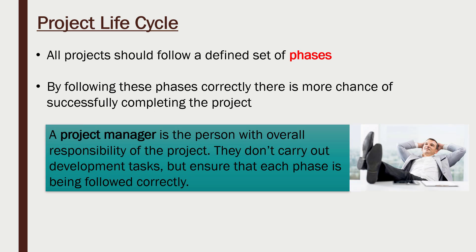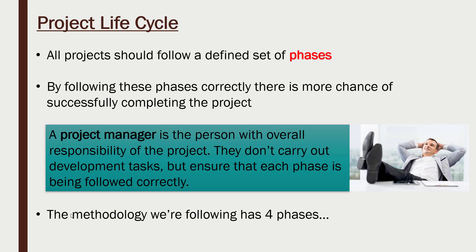We said earlier that projects can be individual or collaborative. Assuming they are collaborative — i.e. have more than one person — you need to have a project manager, someone who is in complete control of the project and has responsibility for it. Usually they're not going to carry out any of the actual tasks themselves; they're going to delegate the work to someone else, which is why we often have an image of a manager being a bit lazy. But actually their job is to ensure that each phase is being followed correctly. Being a project manager is quite a serious job — you often need certain qualifications, maybe a degree or an MBA, because you've got a lot of responsibility. There are also lots of different methodologies for completing projects.